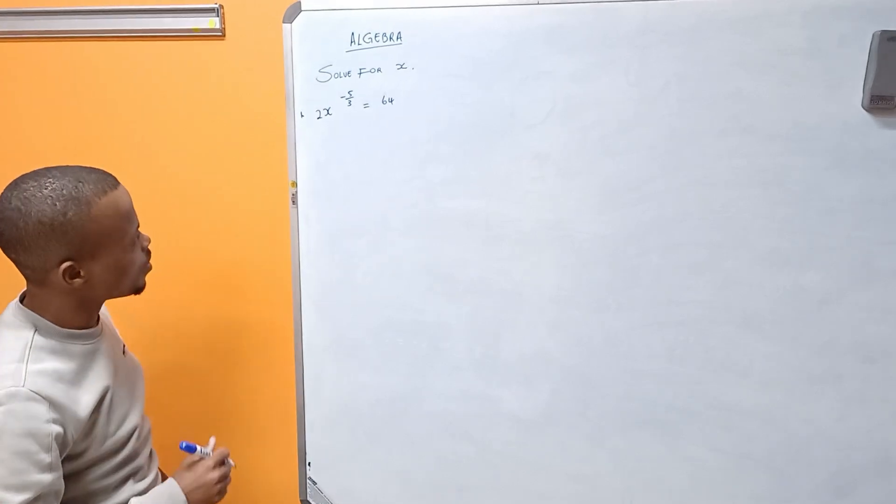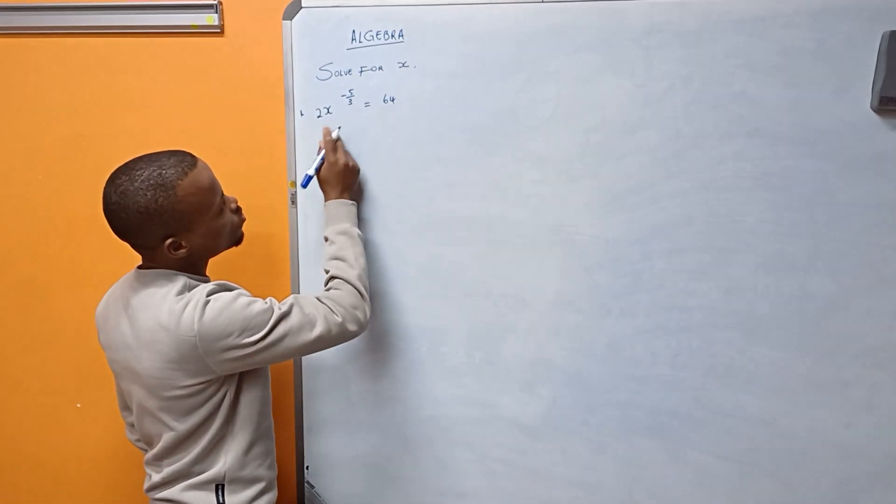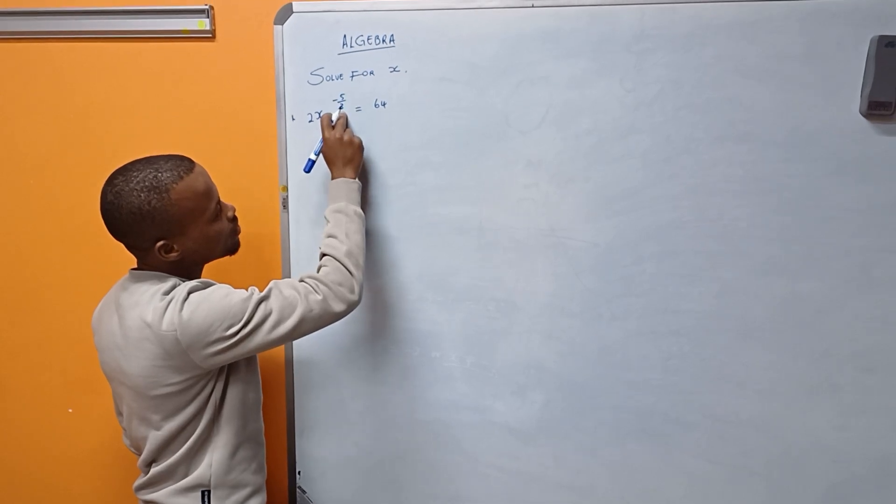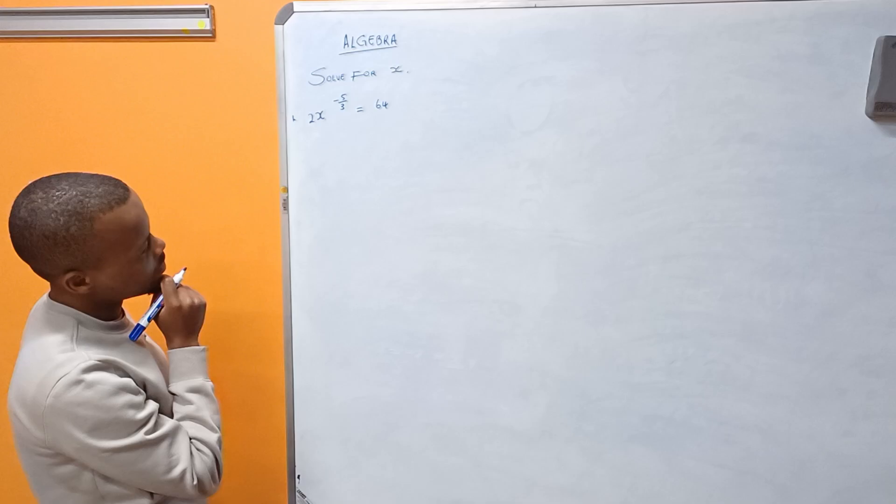The problem given to us is of this form: 2x to the power of minus 5 over 3 being equal to 64. And here I am required to solve for x.